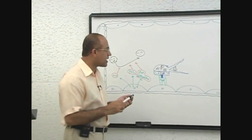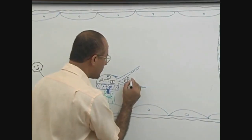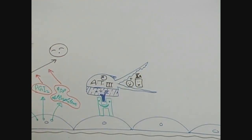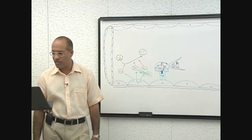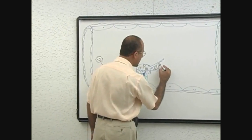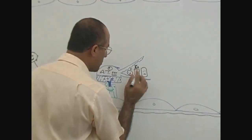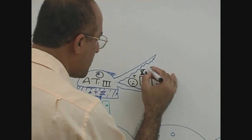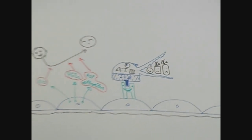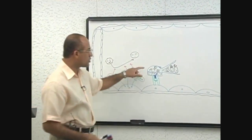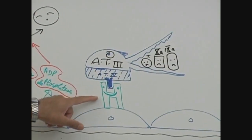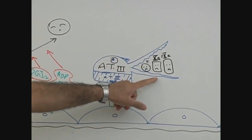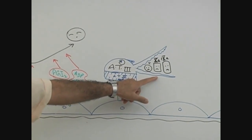Later on it was discovered that antithrombin-3 can also inactivate activated factor number 10, and it can also destroy activated factor number 9. So antithrombin-3, once it binds with heparan sulfate, becomes active and inactivates thrombin, activated factor 9, and activated factor 10.